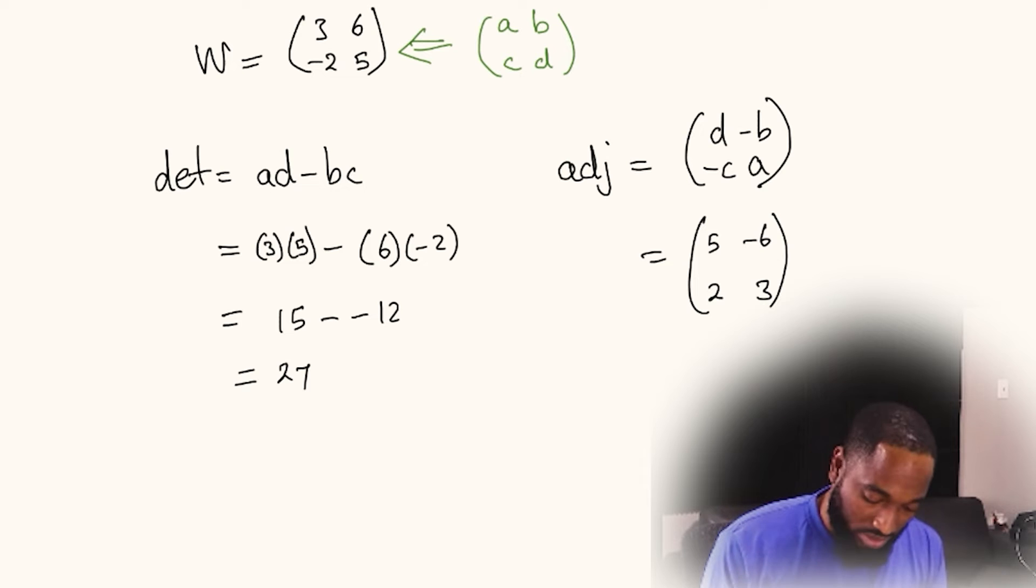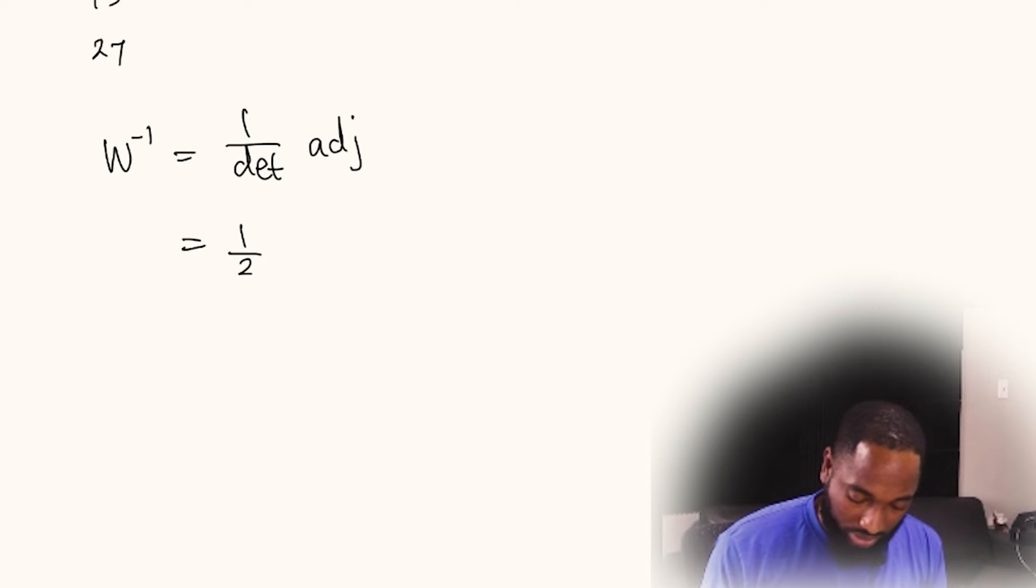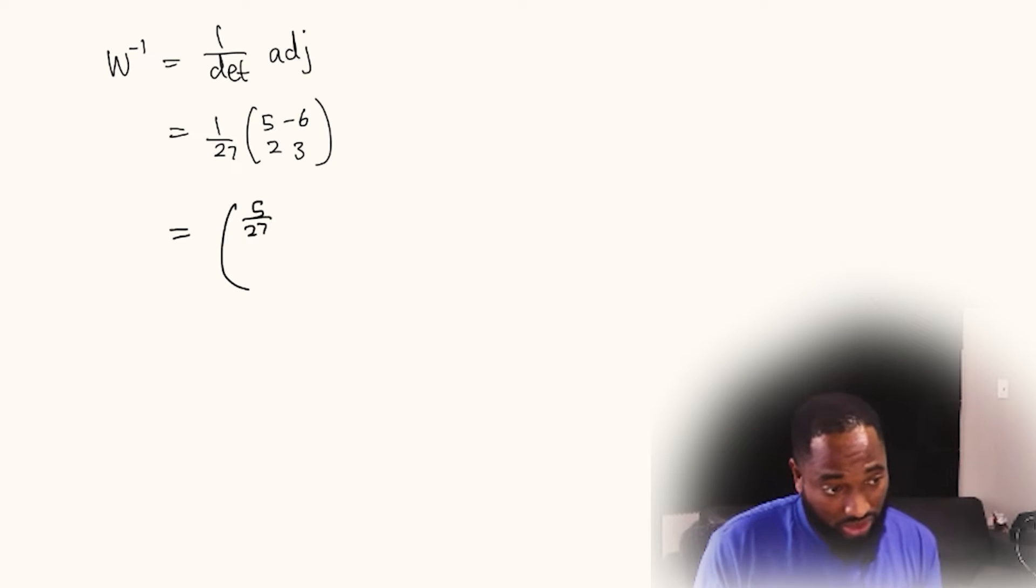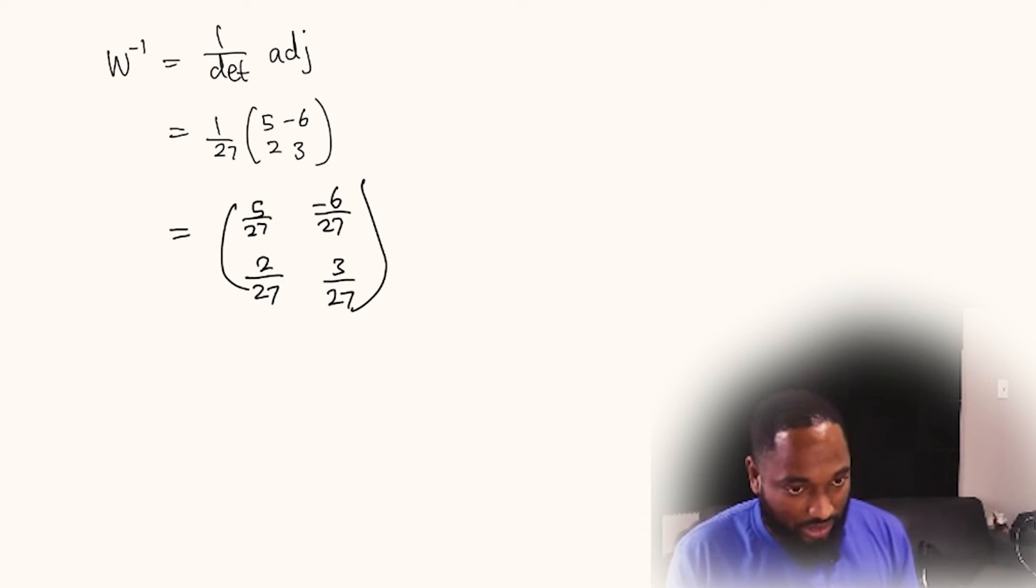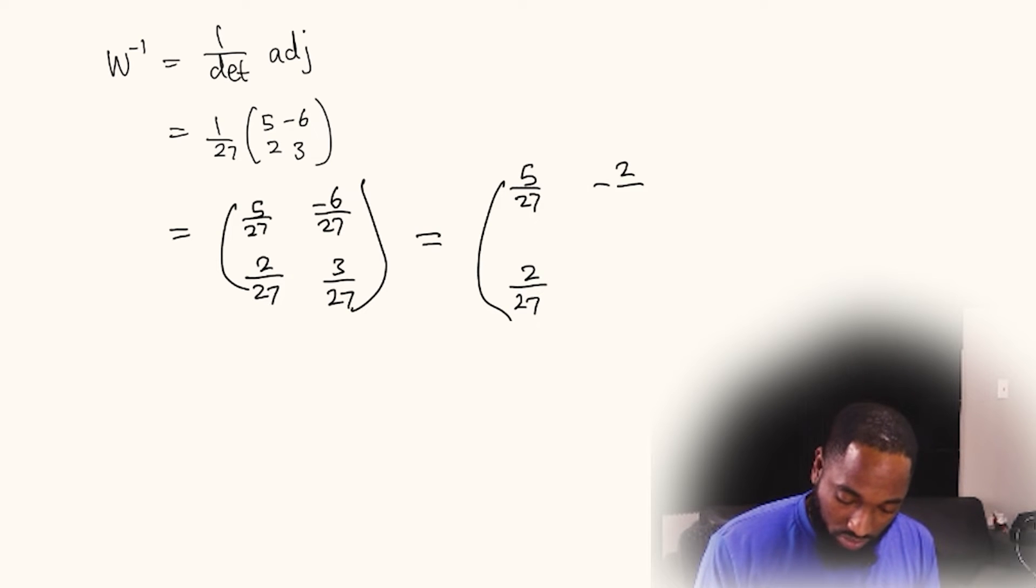The formula is one over the determinant by the adjoint. So W inverse, which is also P, is equal to one over 27 multiplied by five, negative six, two, three. Technically this is your answer here already, but let's put everything over 27. This is gonna give us five over 27, two over 27, negative six over 27, and three over 27. This could look even more condensed: five over 27, two over 27, negative two over nine, and one over nine.